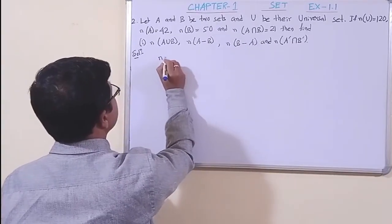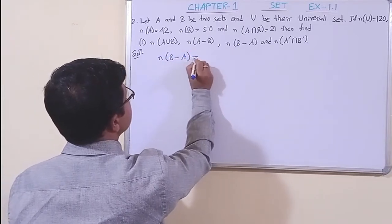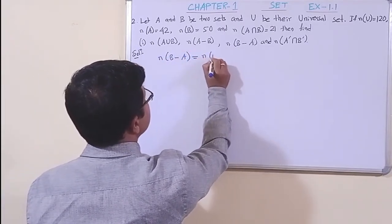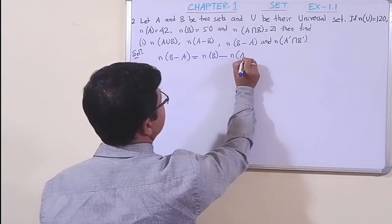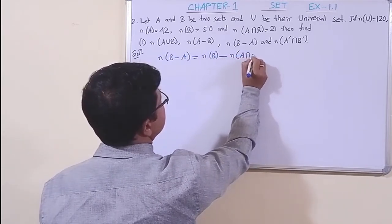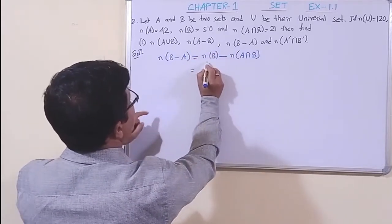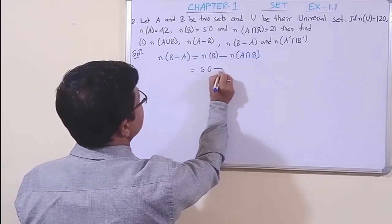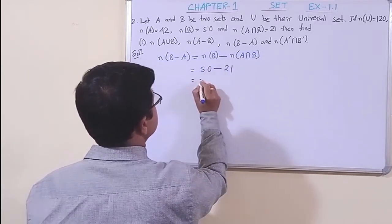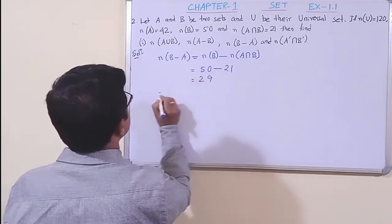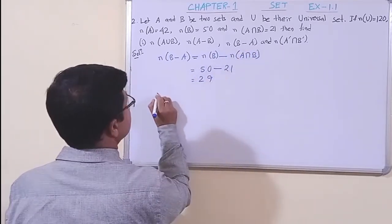Similarly, n(B−A) = n(B) − n(A∩B). Putting in the values: n(B) = 50 minus n(A∩B) = 21, so the difference is 29.